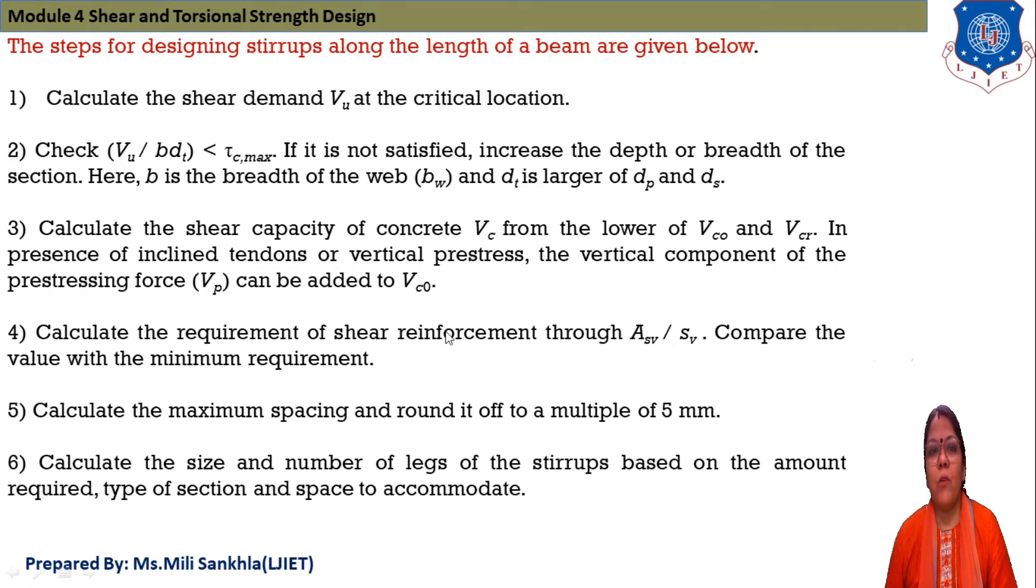Calculate the requirement of shear reinforcement through area of stirrups divided by spacing. Compare value with minimum requirement. Calculate the maximum spacing and round it off to multiple of 5 mm and also the size of member number of leg of stirrups based on amount of required type of section and space to accommodate. This one is the steps for when we provide stirrups in our beam.